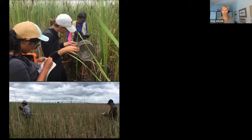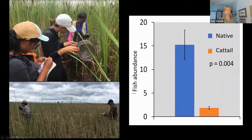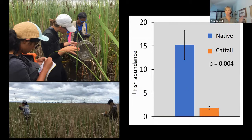We also looked at fish in our Northern Lake Huron studies. Fish abundance was clearly much higher in native vegetation sites compared to cattail-invaded sites — more species and a really different fish community as well. This forms the background for the questions we're asking in Minnesota.